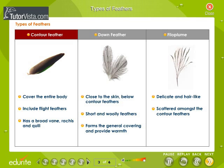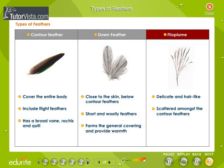Contour feathers cover the entire body. They include flight feathers and have a broad vein, barbs, and quill. Down feathers are close to the skin below contour feathers. These feathers are short and woolly; they form the general covering and provide warmth. Philloplume feathers are delicate and hair-like and are scattered amongst the contour feathers.